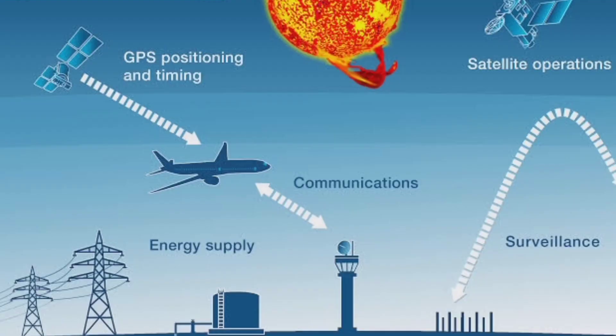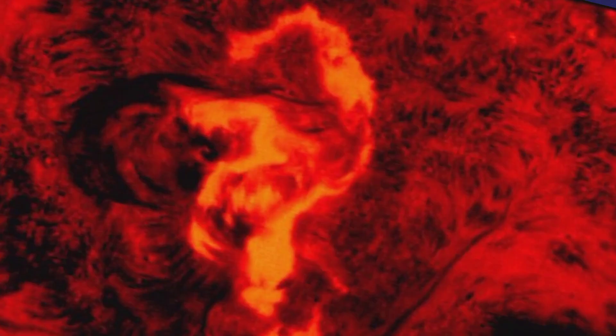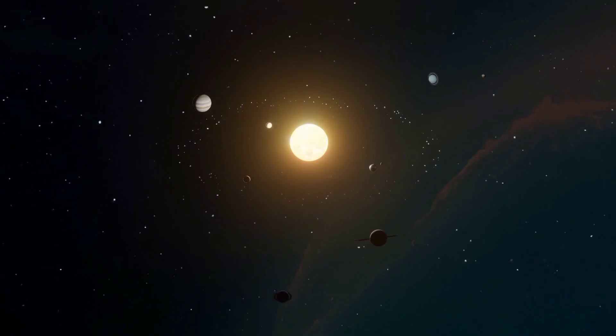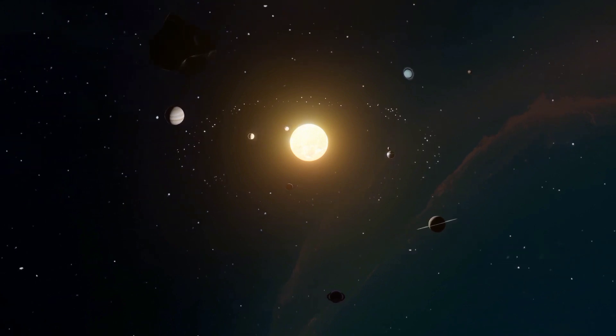These explosions can release intense bursts of radiation and charged particles, potentially disrupting communication systems and damaging satellites. These dark, cool regions on the sun's surface create bursts of charged particles that can disrupt power grids and cause the aurora to appear further south than normal.